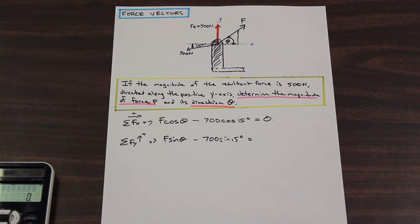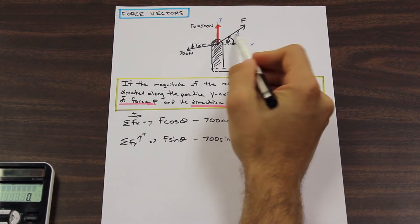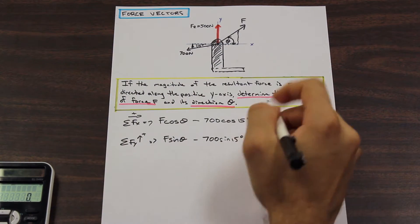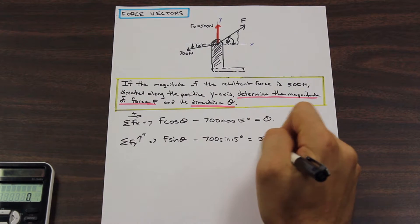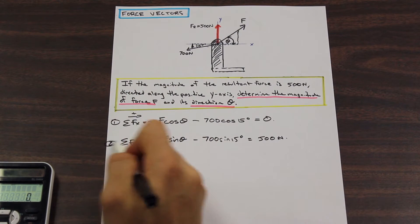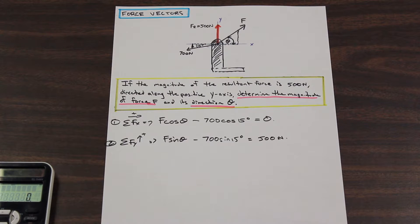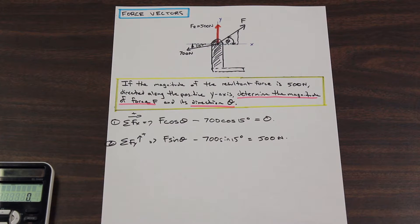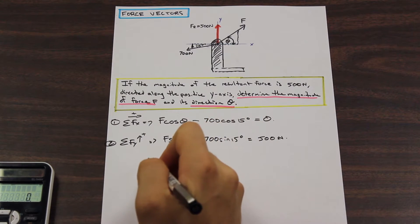The resultant force is the sum of these two forces — it's what these two forces are equal to — so this expression equals 500 newtons. Now we have a set of two equations with two unknowns: F and theta. We could substitute, but an easier way is to divide the two equations by each other and cancel the F's.